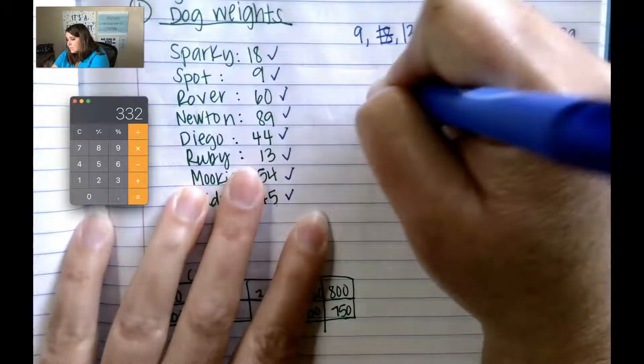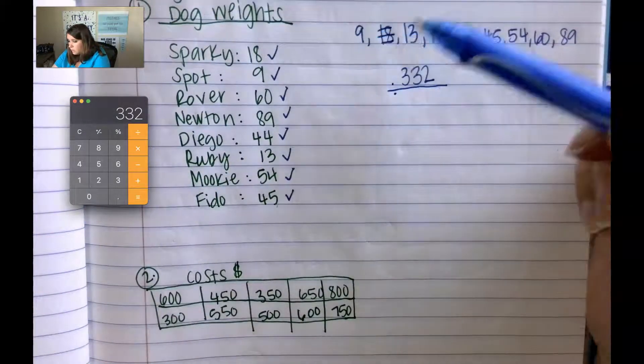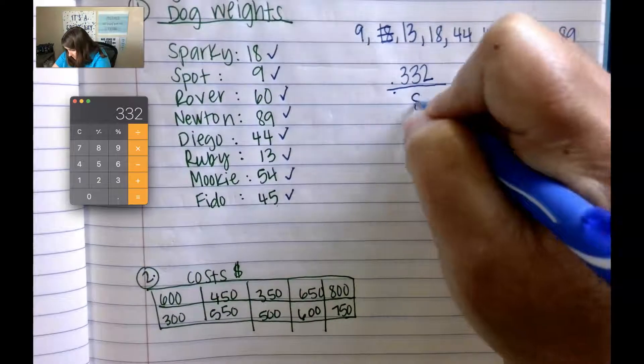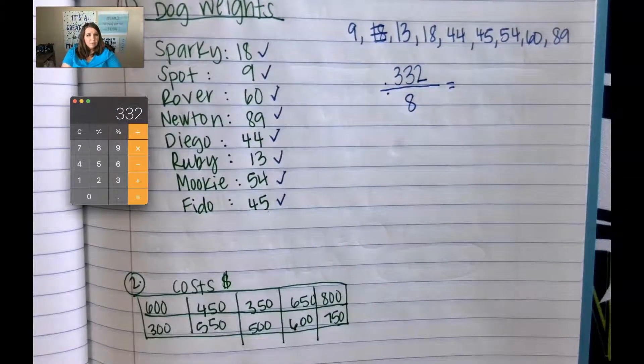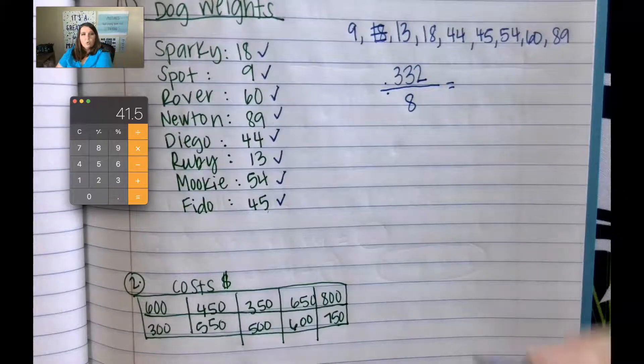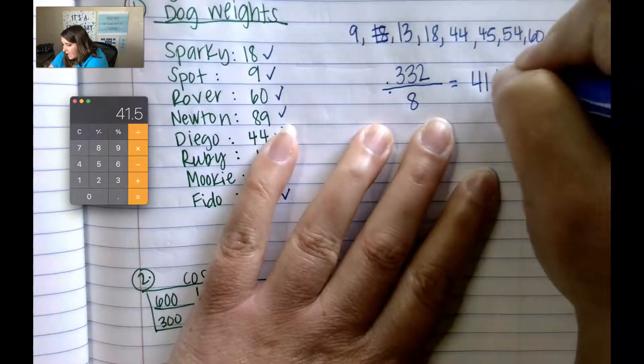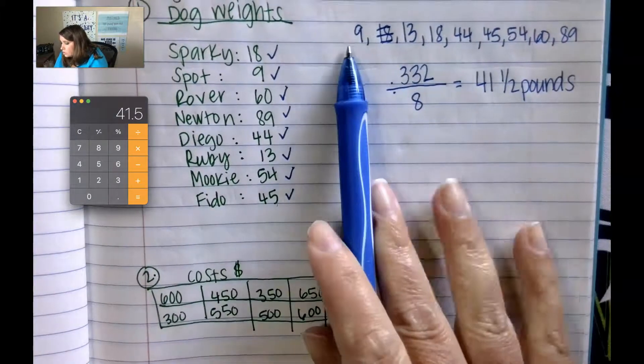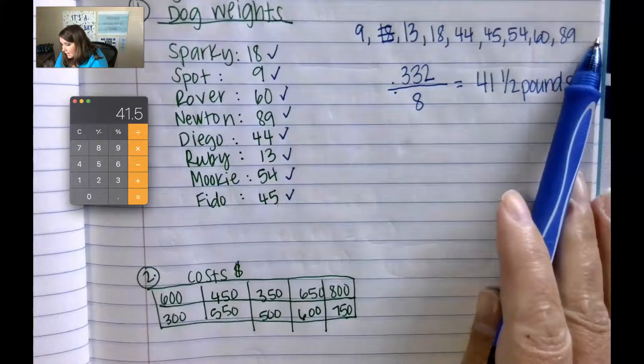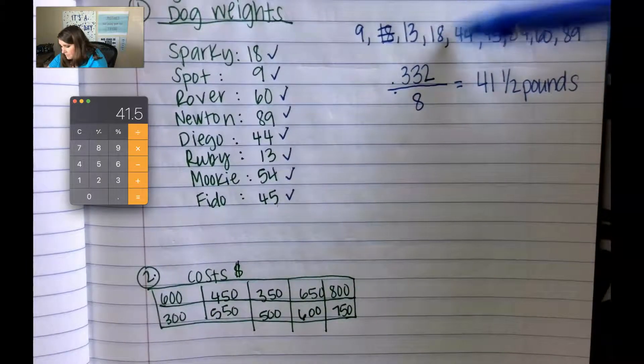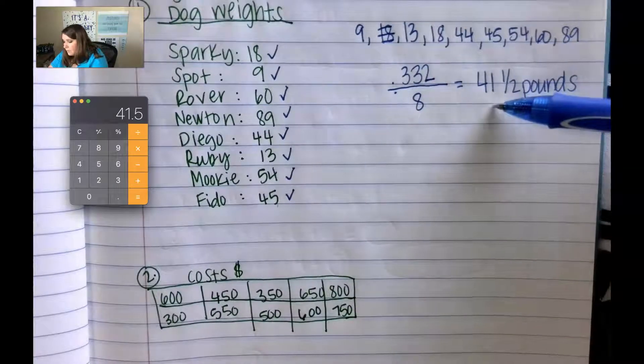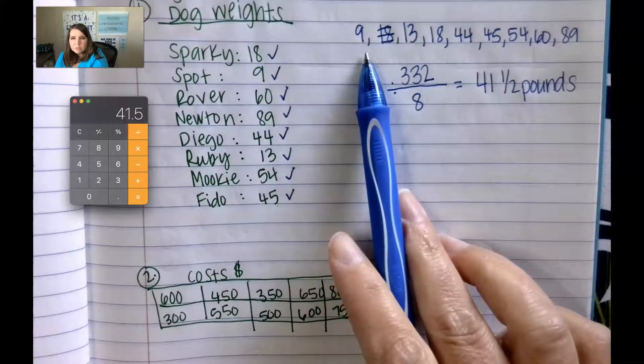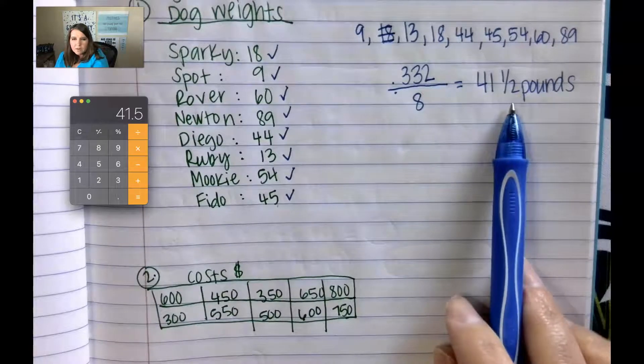We are going to divide this by 8 data points. So 332 divided by 8, and that gives us a total of 41 and a half pounds. That is the average. Does it fall within our range? It does. It falls between 9 and 89 right about here. Again not in the middle but it is right about here, and that is because these two numbers on the ends are so different. That is an 80 pound difference there. So the average dog weight is 41 and a half pounds.